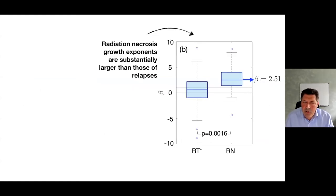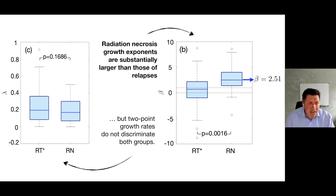The problem is radiologists currently don't know how to discriminate radiation necrosis from relapses. It's very interesting that if you compute the beta exponent of radiation necrosis events, they are substantially larger than those of relapses. This is statistically significant. Interestingly, you just need two points. To compute beta, we need three time points. If you just get two points, you cannot discriminate between radiation necrosis and relapses. It's not just a question of fast growth. It's a question of the shape of the curve. You cannot get that with only two time points.